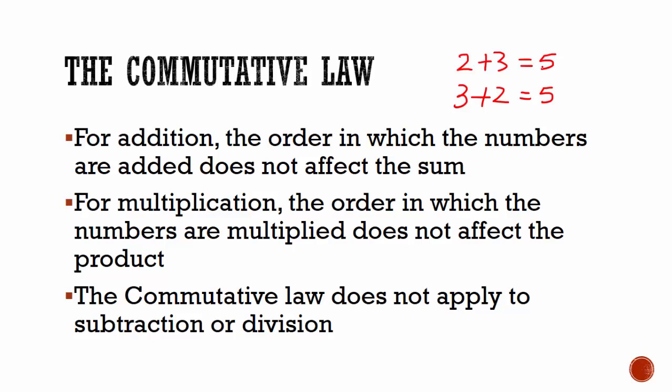The same is true for multiplication. The order in which we multiply does not affect the product. 7 multiplied by 3 is equal to 21, and 3 multiplied by 7 is equal to 21.